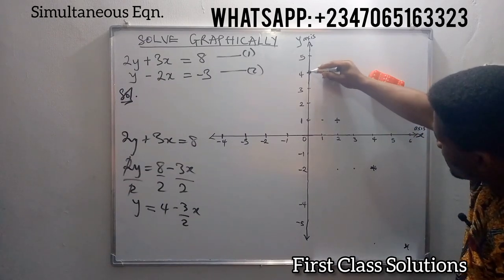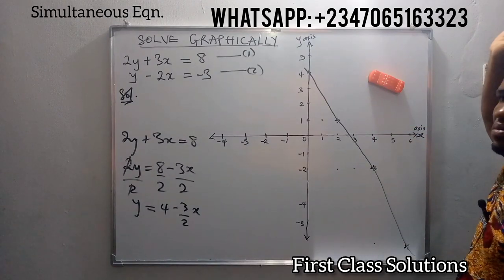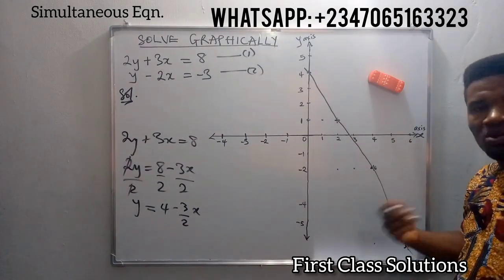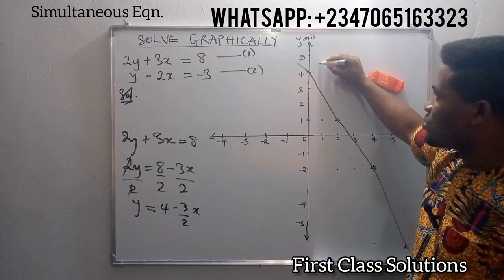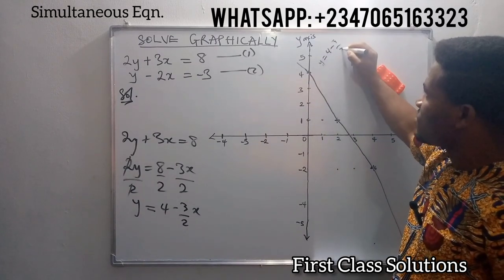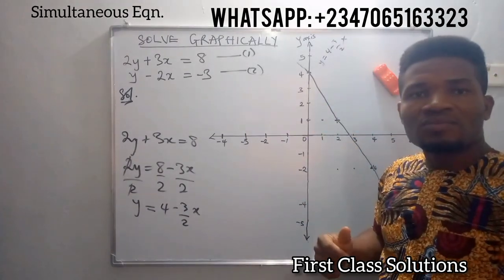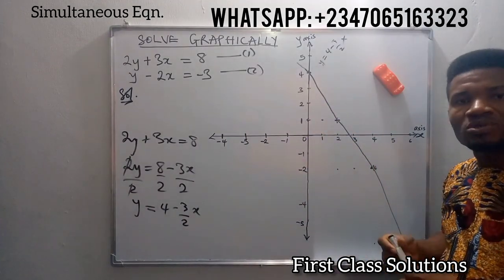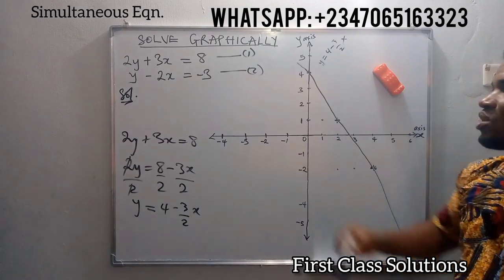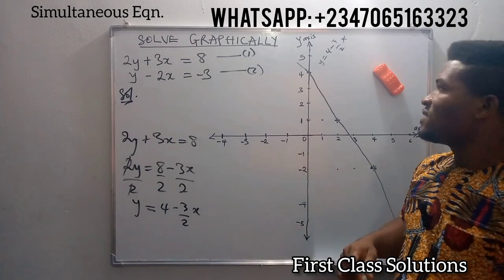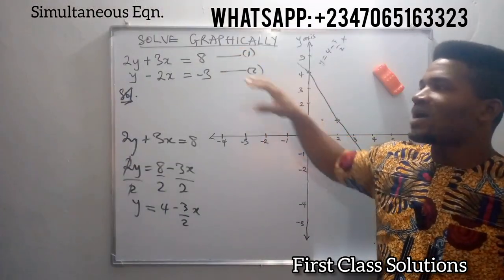If you now trace this — don't mind my imperfect line — you can trace it out. You can continue those steps as long as your graph can carry you. This line represents the equation y equals 4 minus 3 over 2 of x. We're going to solve the second equation as well, so as to use the graph to solve both simultaneously and see where our first and second equation meet.